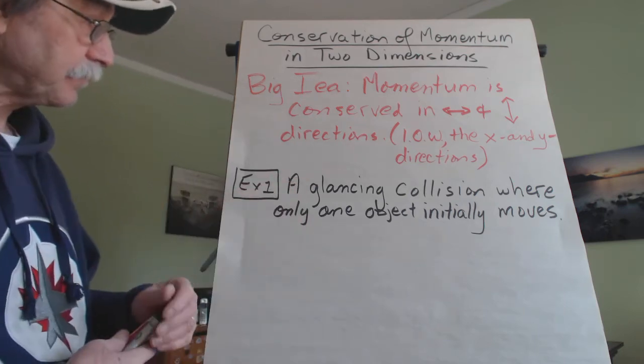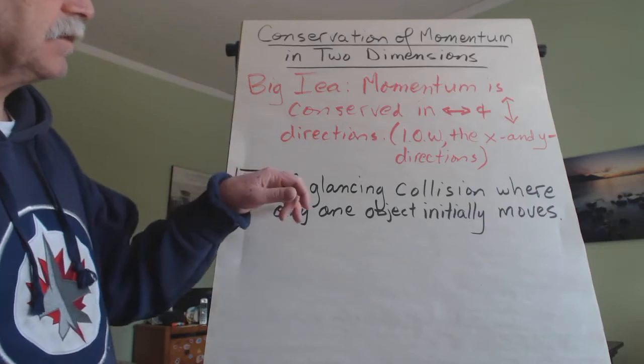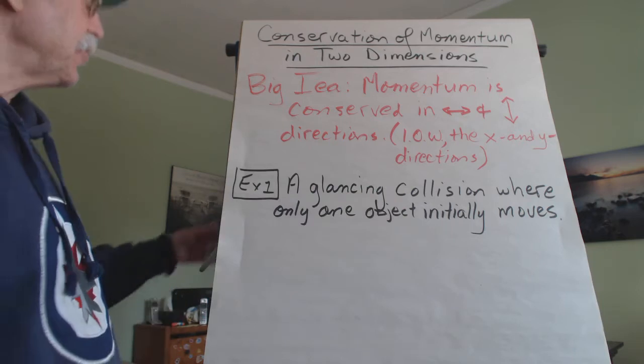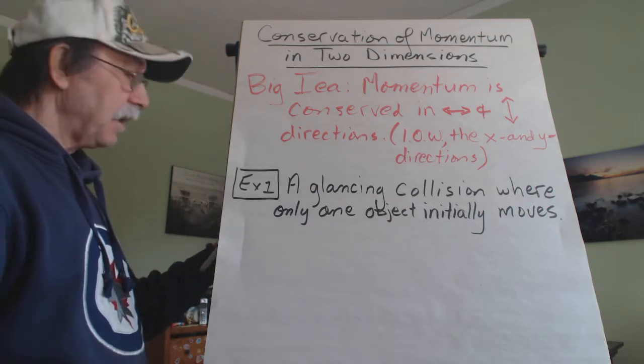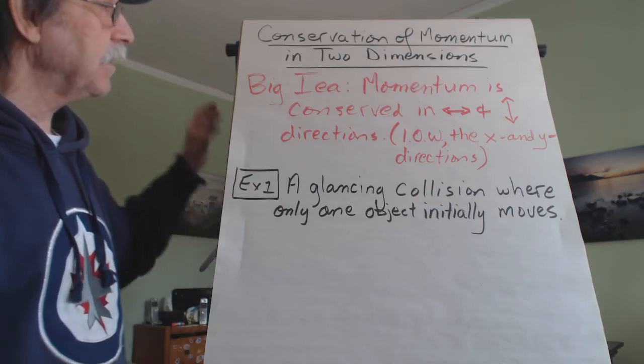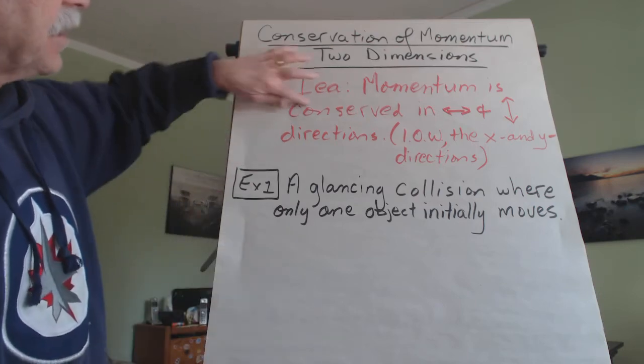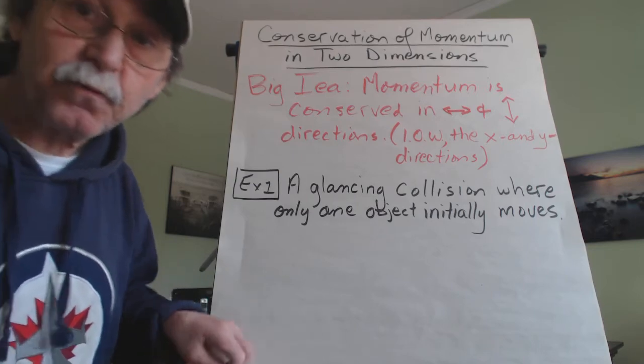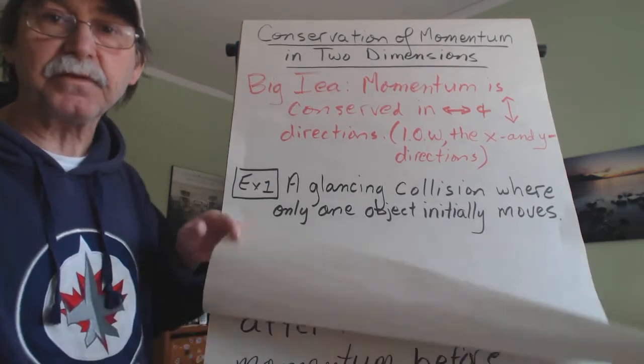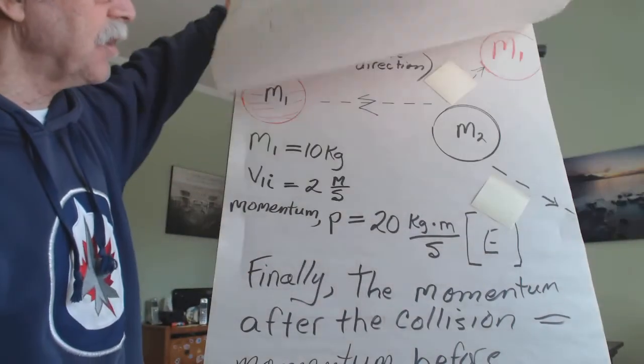Here's our question. A glancing collision where only one object initially moves. And we're going to use the example of a curling rock. And don't forget this big idea because I always go back to a big idea. You have to have something to hang your solution around.